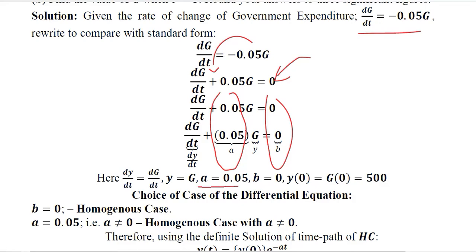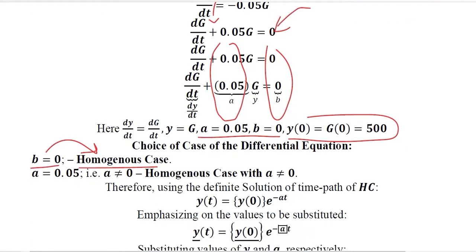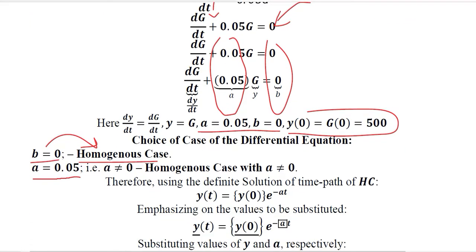These are the couple of values that we were looking for. In addition, we are given the initial condition, which is 500. So it is 0, the value of b. This means we are dealing with a homogeneous case, whereas the value of a is definitely non-zero, which is 0.05.